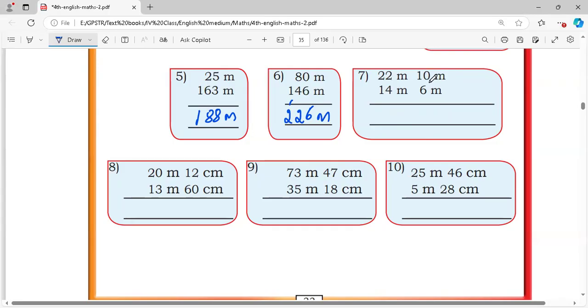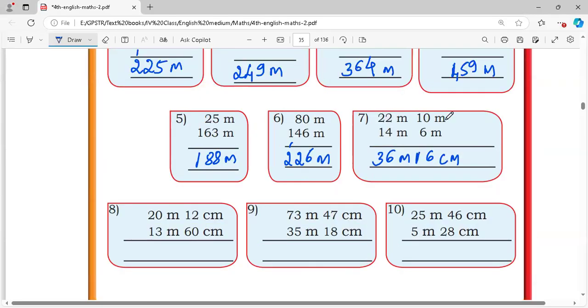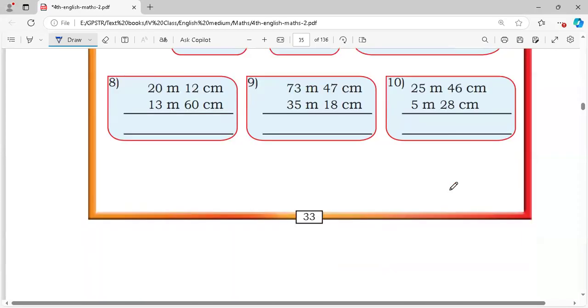Seventh: 0 plus 6 is 6, 1 as it is, 2 plus 4 is 6, 2 plus 1 is 3, equals 36 meter 16 centimeter. We are given meter only, therefore this is wrong. Make the correction - centimeter, centimeter, centimeter. Next.